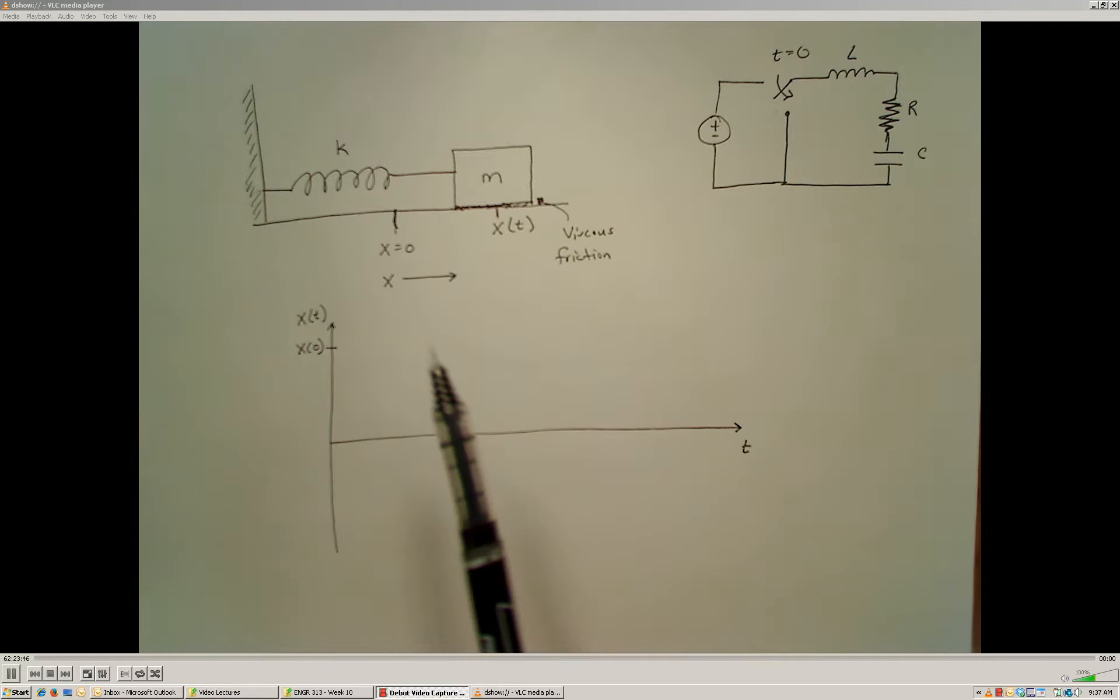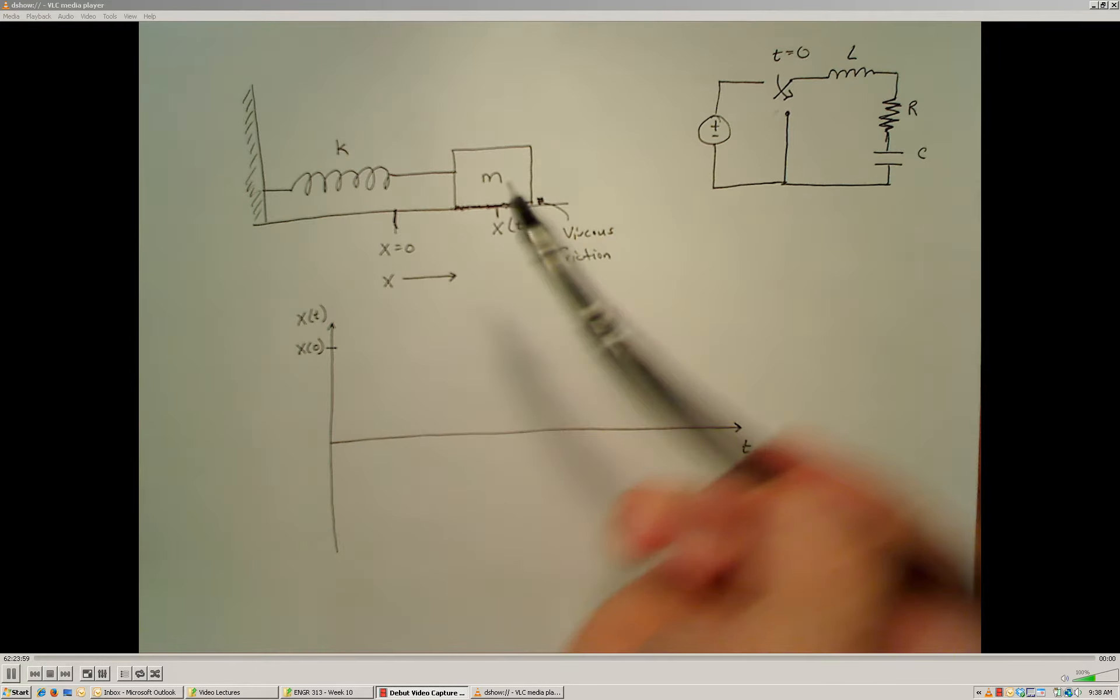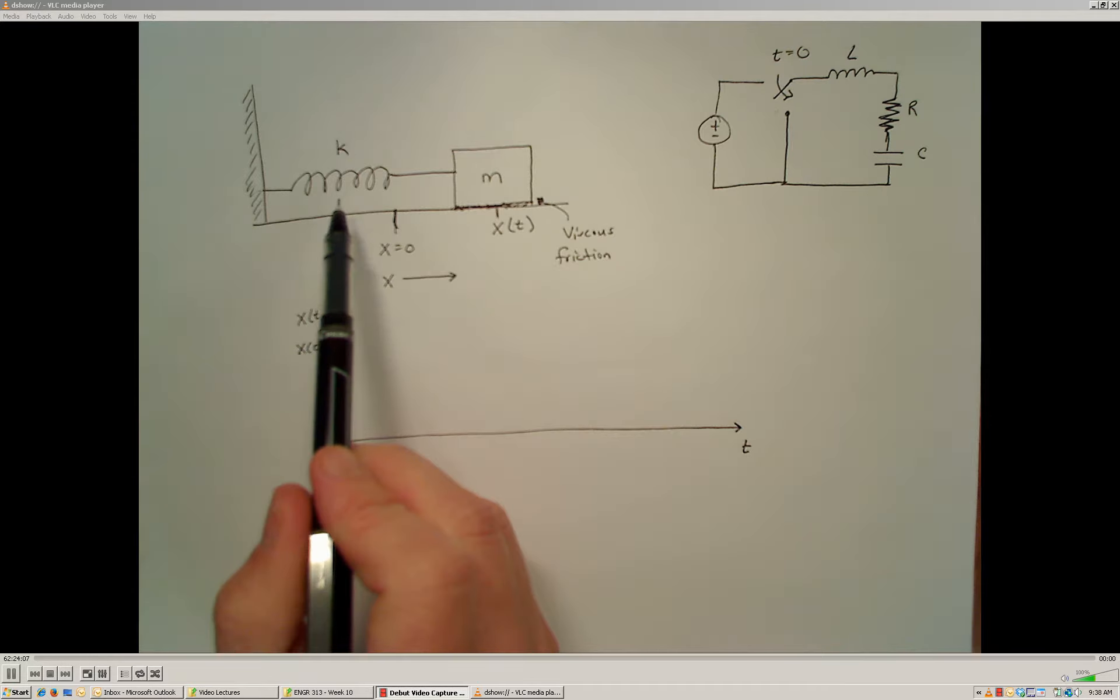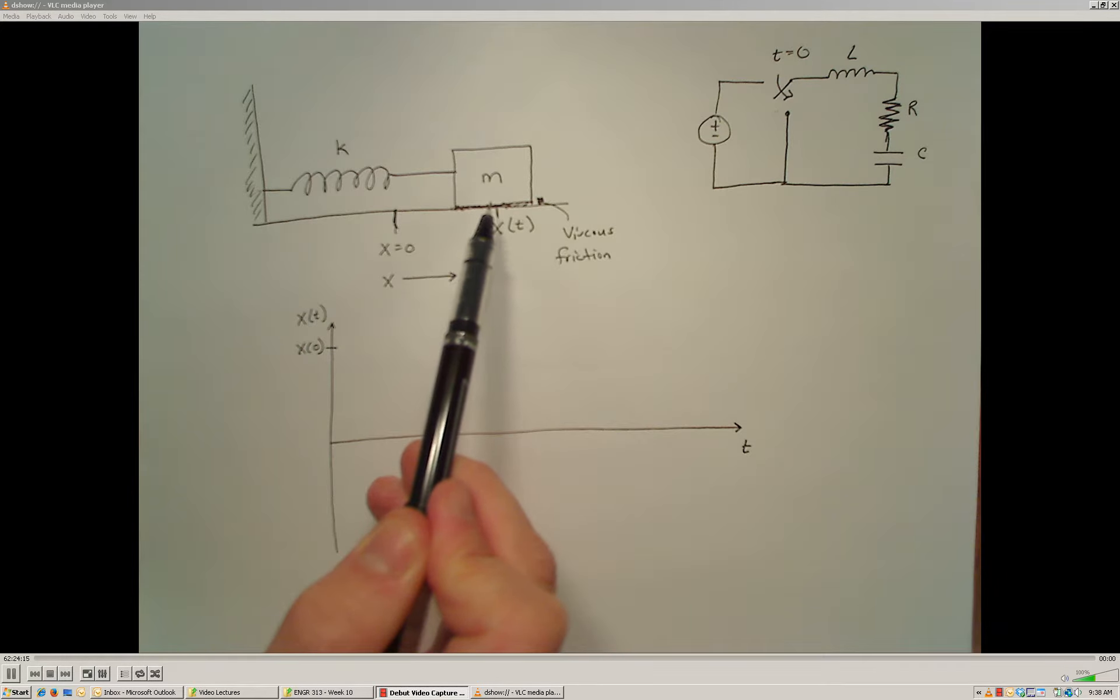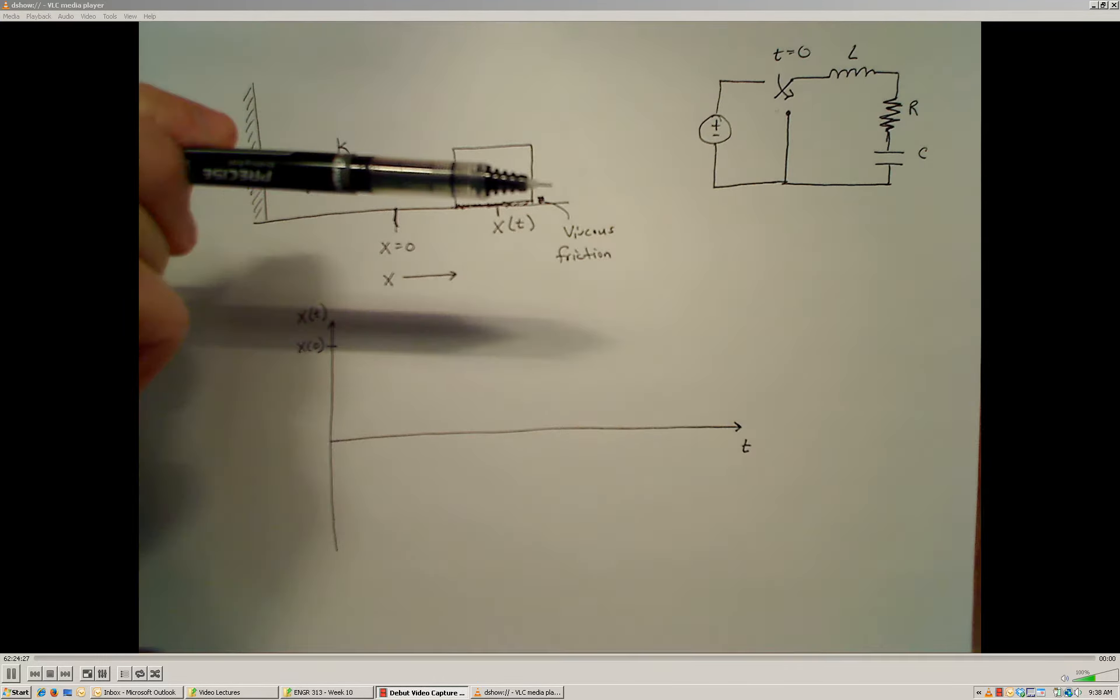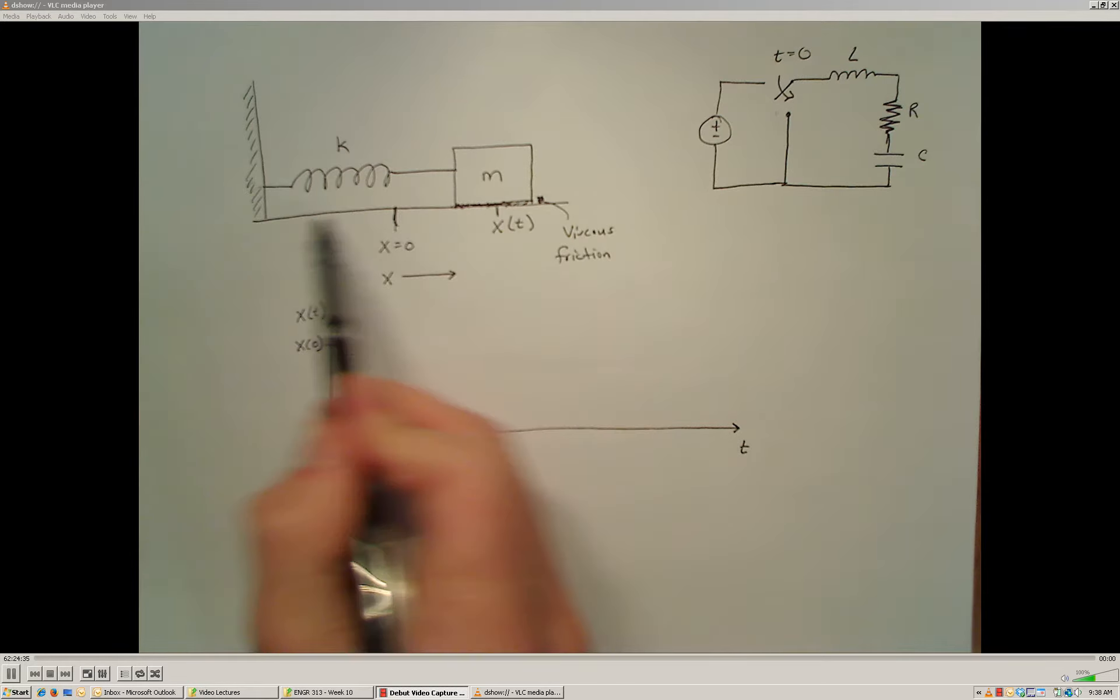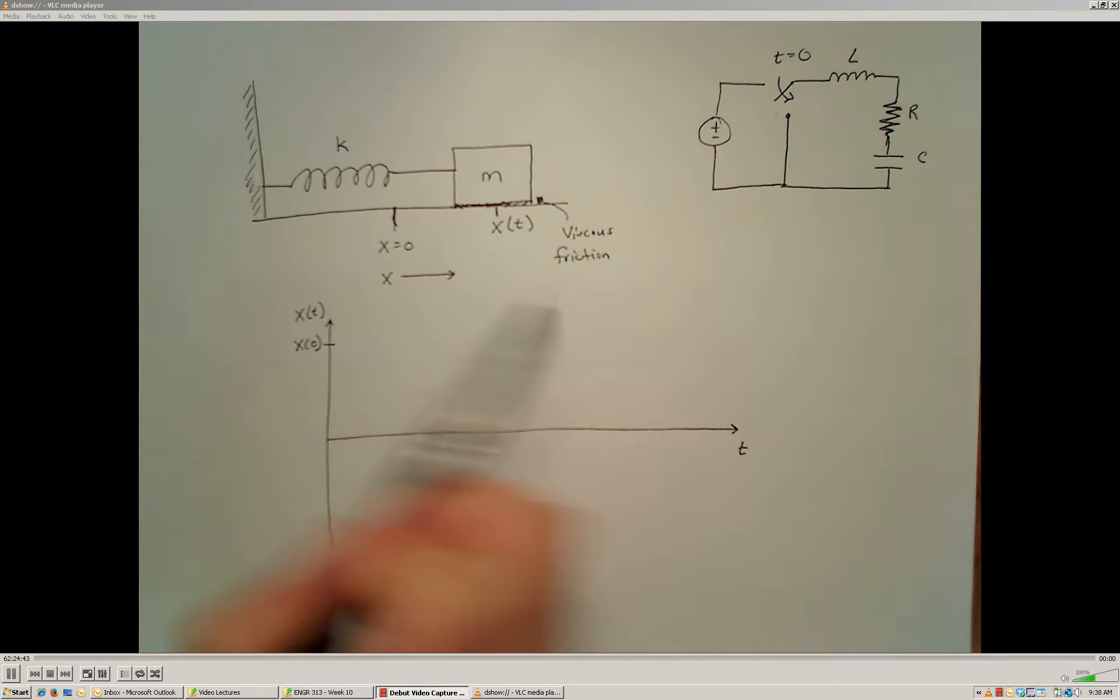The first thing that we would expect is that if I release the mass from this initial position, since I have the spring attached and I have this fluid viscous friction, the spring is going to exert a force on the mass and cause it to start traveling in the negative x direction. Depending upon the parameters of the spring, how strong the spring is, the size of the mass, and the amount of friction that's present, I would expect that it would overshoot the original x zero position. At that point in time, the spring would be compressed, so it would exert a force in the opposite direction on the mass and go back that direction.